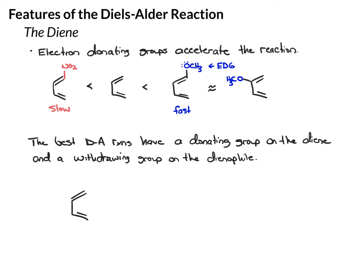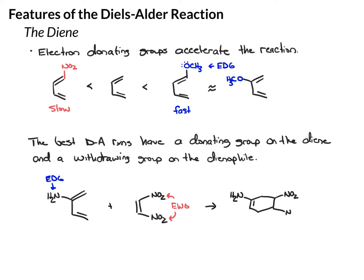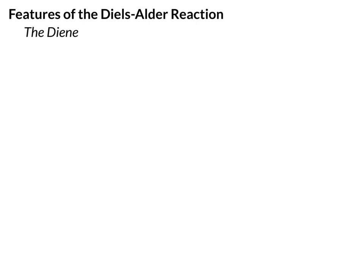Here's an example. Here's a diene, and I'm going to put an NH2 group on it — that's a donating group. And then on my dienophile, I'm going to put a couple of nitro groups. Those are electron withdrawing groups, so this is going to be a really fast Diels-Alder reaction. Here's our product: we'll have on one side the amino group, and on the other side the nitro groups. Since they're cis on the double bond, I'll draw them cis in the product, and then write 'plus enantiomer' to indicate the other enantiomer will also form.